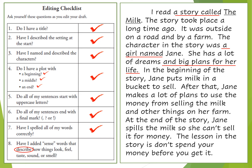In the beginning of the story, Jane puts milk in a bucket to sell. After that, Jane makes a lot of plans to use the money from selling milk and other things on her farm — she was going to sell the milk to buy other things for her farm, then sell those and buy other things, until the very last thing she wanted was a beautiful dress. At the end of the story, Jane spills the milk so she can't sell it for money — I added that last part because that was what ruined her plans. The lesson in the story is: don't spend your money before you get it.